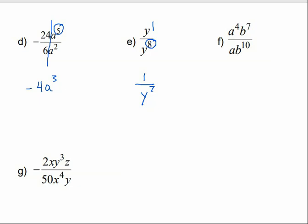For f, we'll deal with the different variables separately. For the a's, we have a to the 4th divided by a to the understood 1st, so that's a to the 3rd on top. Then for the b's, we have b to the 7th and b to the 10th. 10 minus 7 is 3, but b to the 3rd goes on the bottom because the bigger exponent is on the bottom.